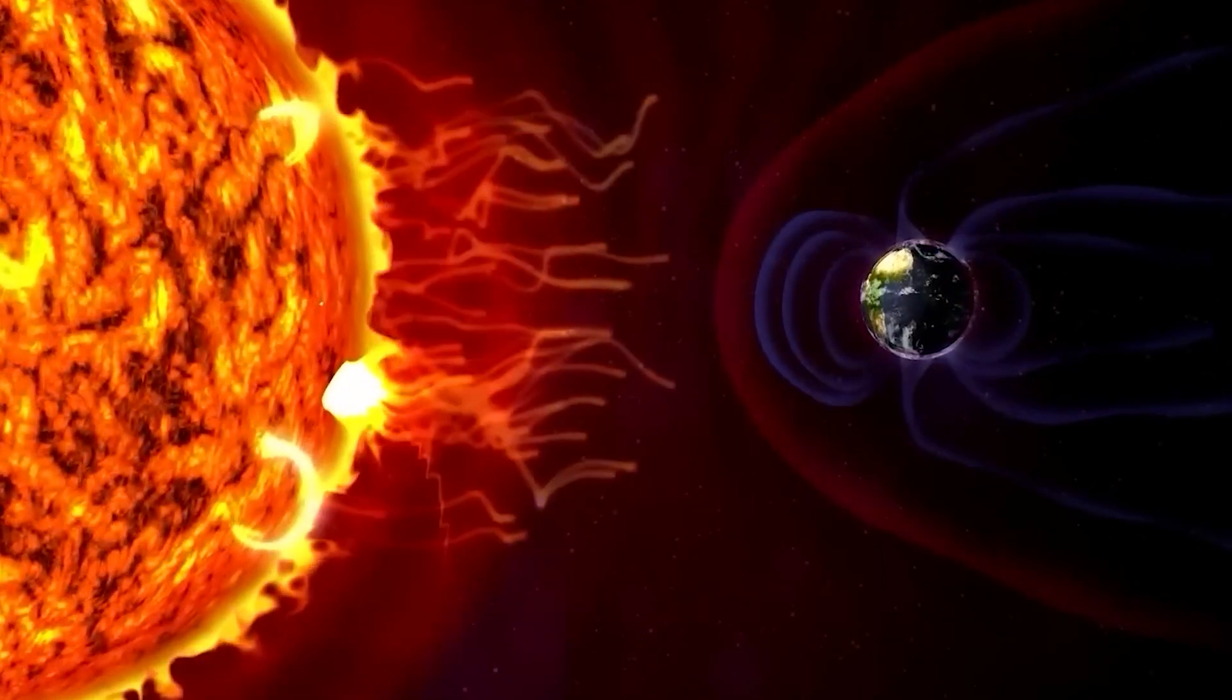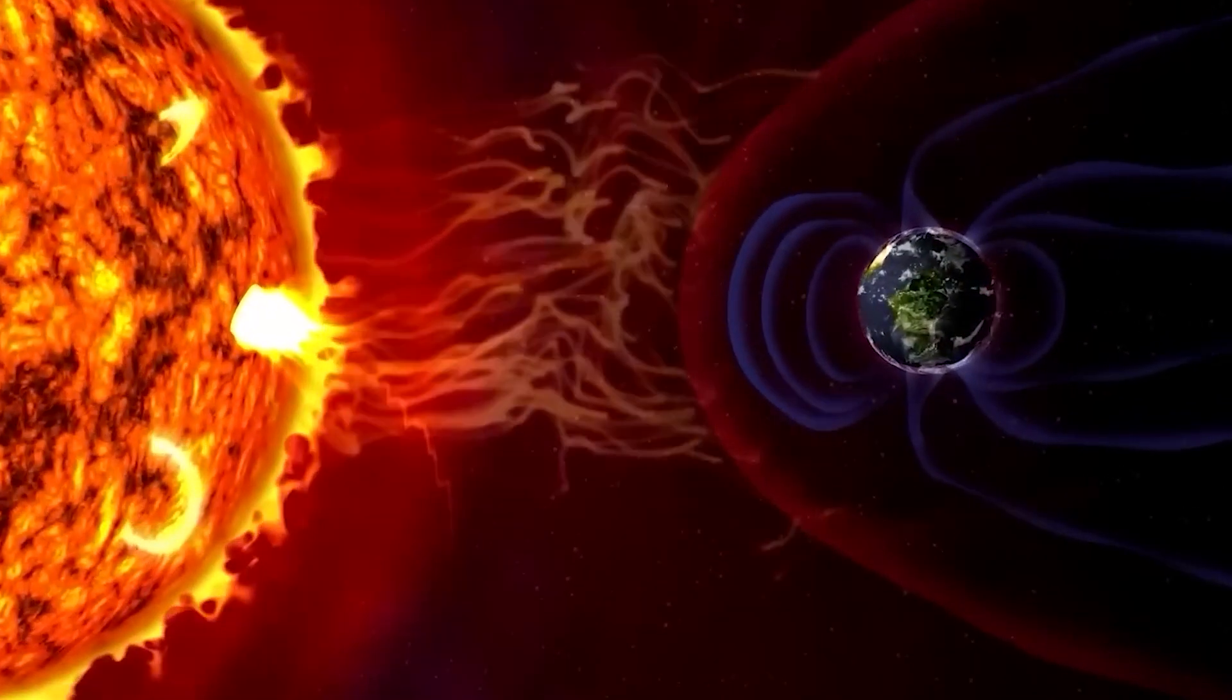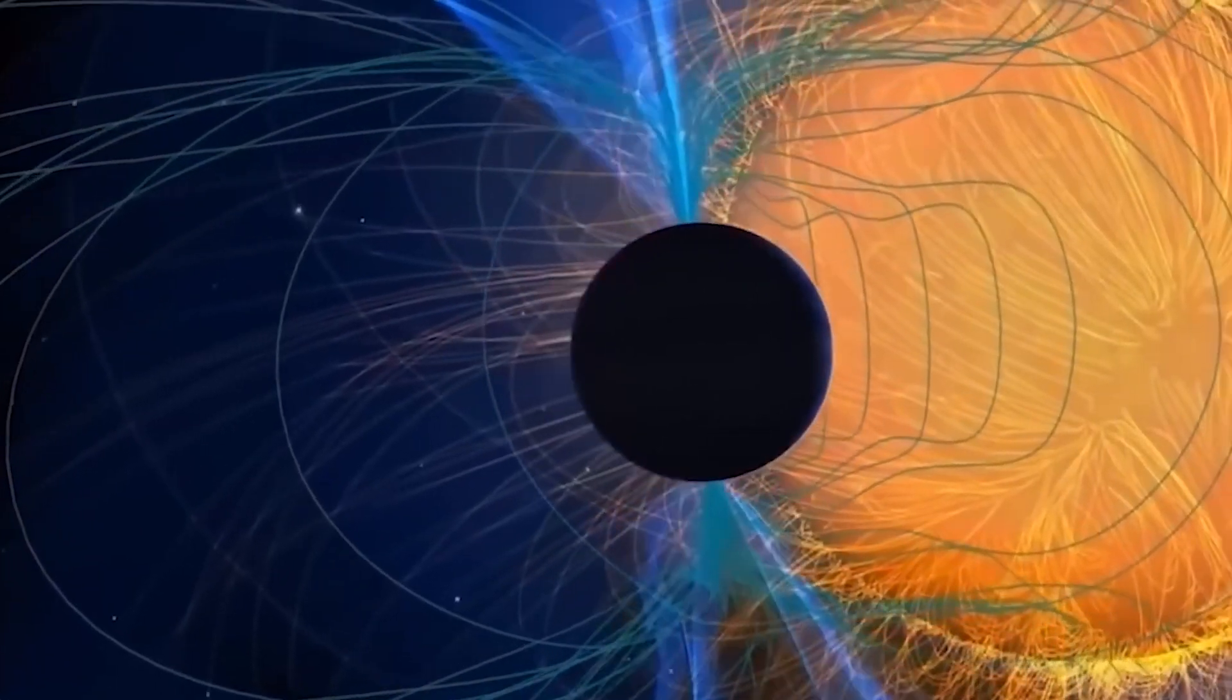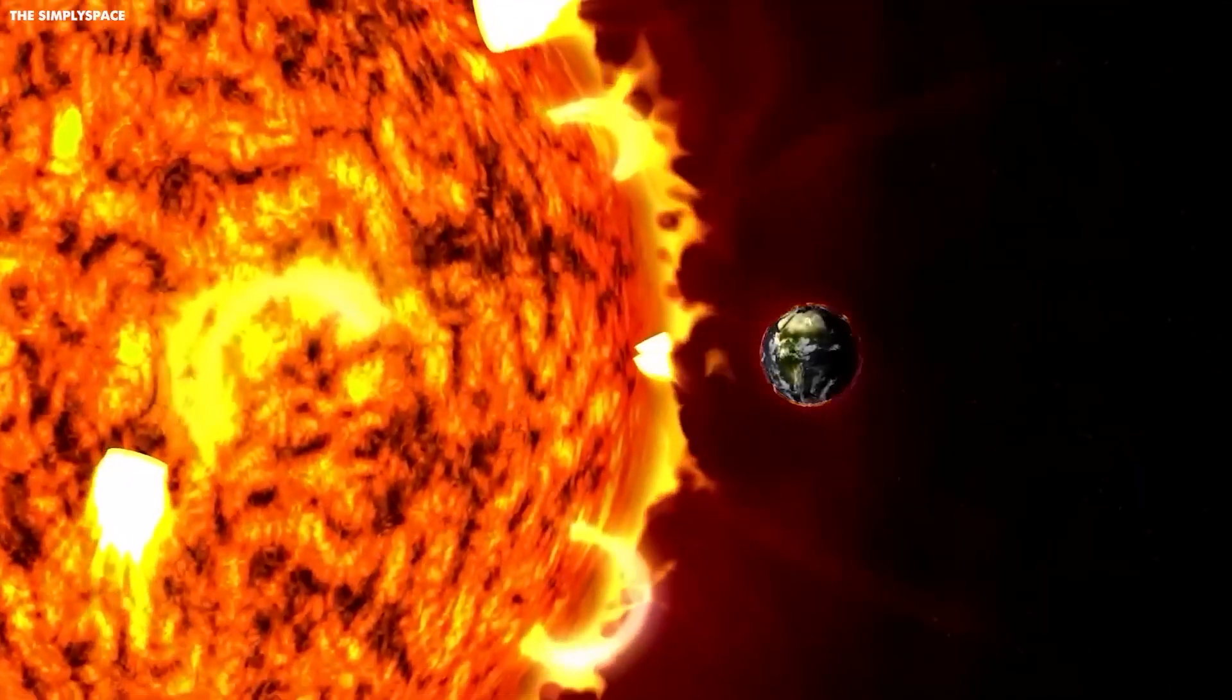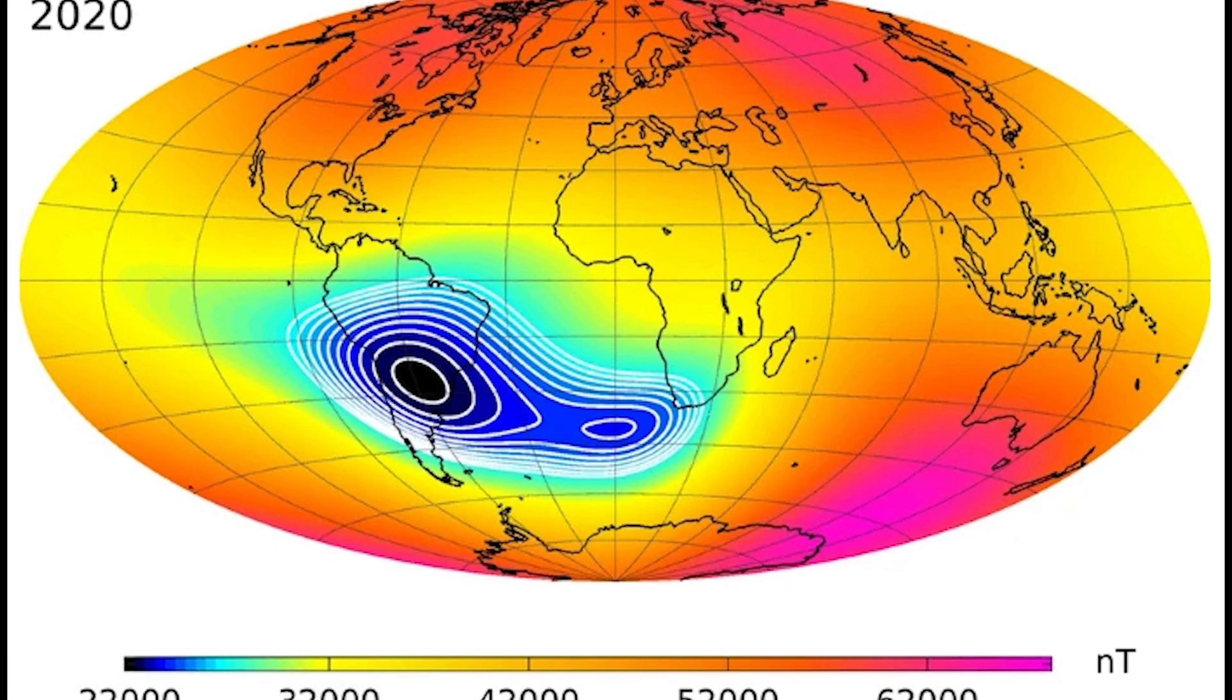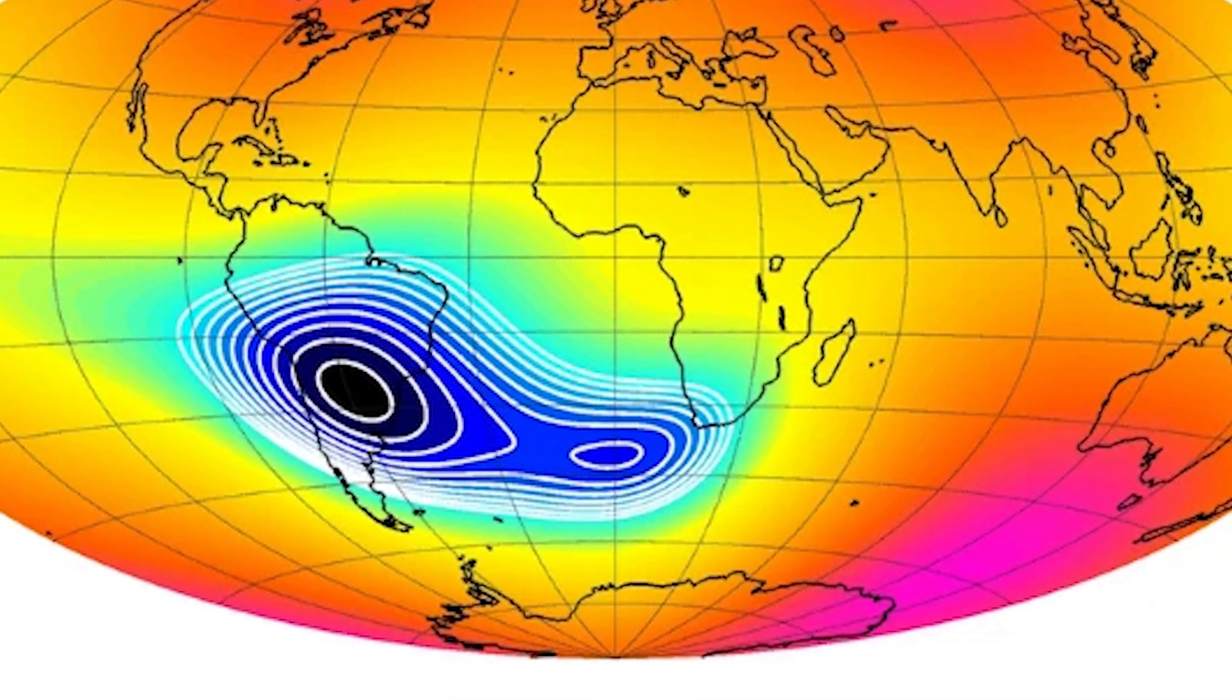They start dancing, twirling, and bouncing those particles back and forth along the magnetic field lines. It's a cosmic ballet. And here comes the plot twist. During these wild events, a localized field with reversed polarity can intensify within the South Atlantic Anomaly region. Now here's where things get even crazier.